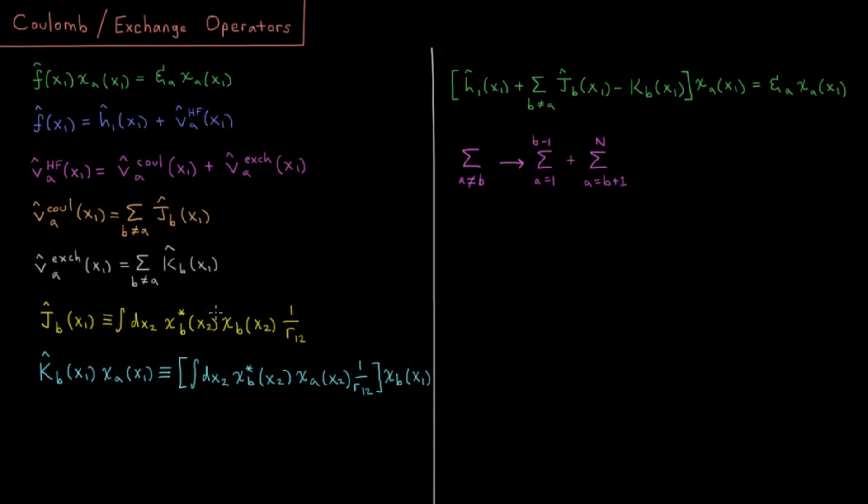So that's the simpler one because that has a nice classical analog. We can understand charge density and Coulomb's law as a classical effect. It's just now it's a classical effect with probability instead of a discrete set of point charges.